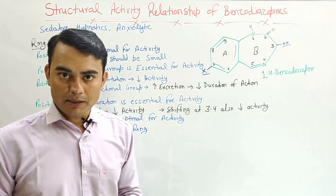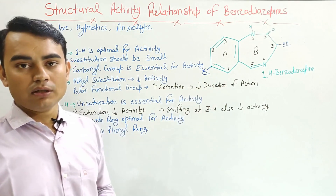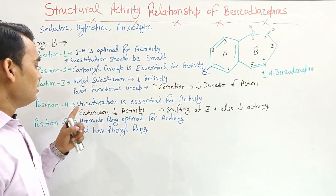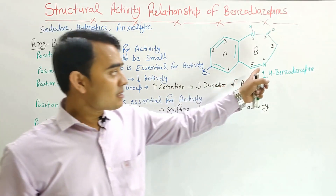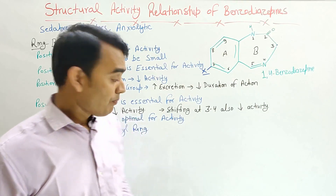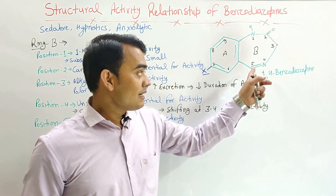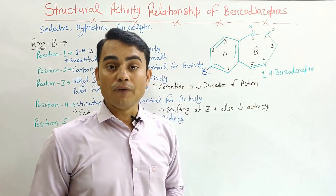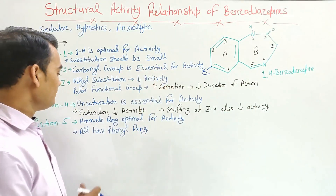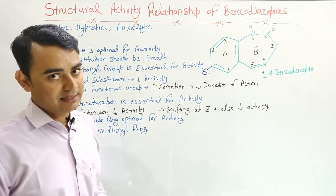Drugs like diazepam, oxazepam, lorazepam, and triazolam have the OH group at position 3, so these are shorter duration of action drugs. Position 4: the 4–5 bond must have unsaturation. This unsaturation is very important for activity. It cannot be shifted to the 3–4 position — it must only be present at 4 and 5. Saturation or shifting of this double bond also decreases the activity.